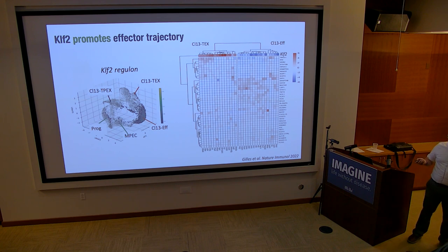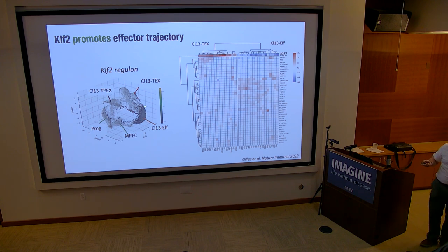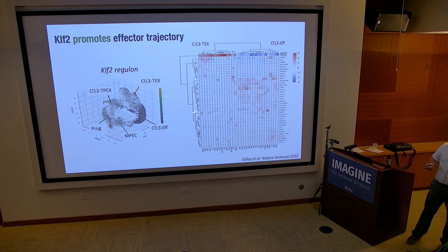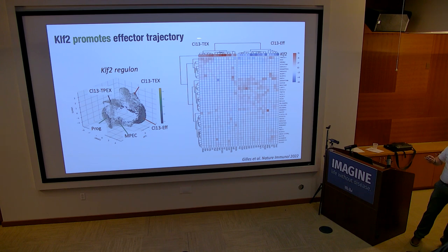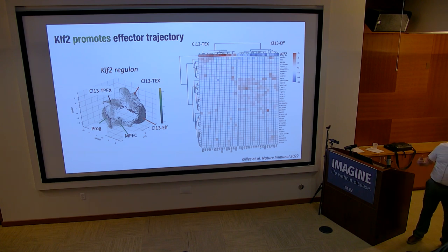We also did analysis of regulons — genes supposedly regulated by KLF2 based on prediction — which were enriched within the effector cell cluster. We took a subset of genes defined by John Wherry's lab as being different between clone 13 exhausted T cells and effector T cells in chronic infection. We found that all the effector cell genes were downregulated and all the exhausted cell genes were upregulated in KLF2 knockouts. We think this is not just a handful of genes, but that these cells are truly differentiating to the wrong states.